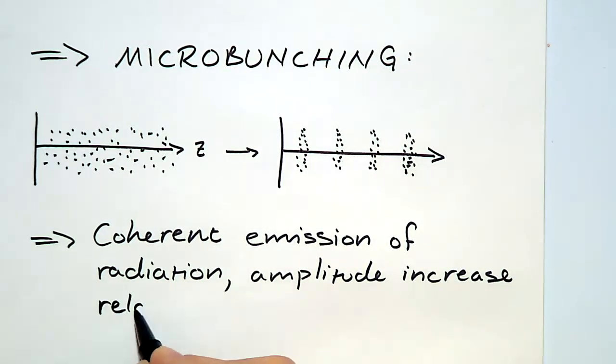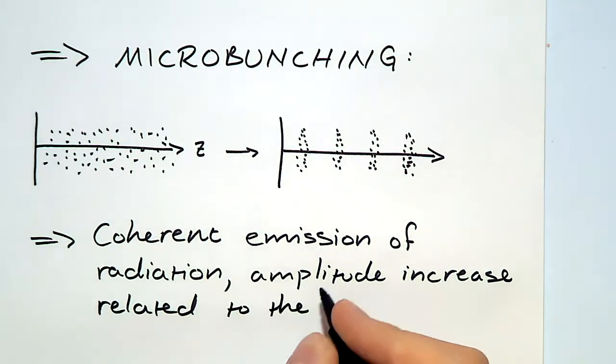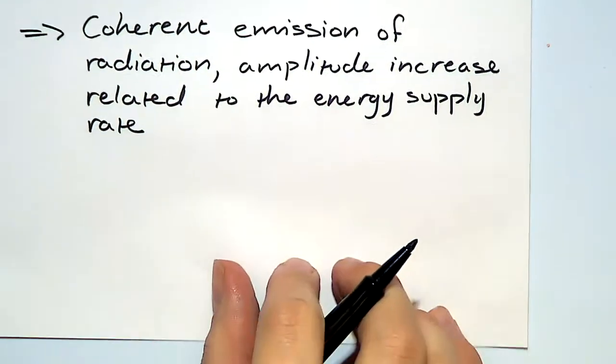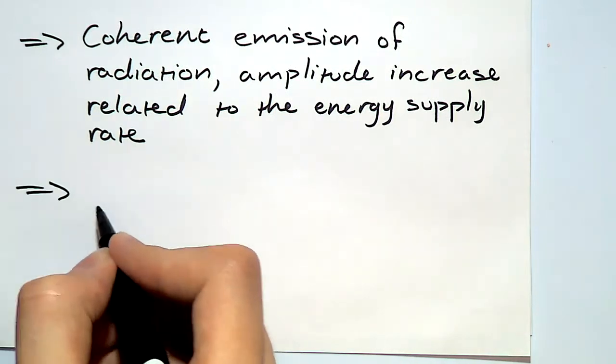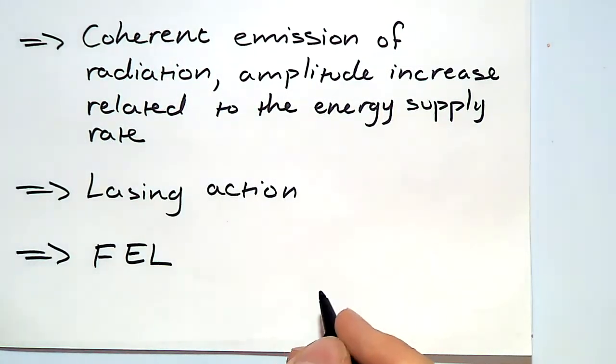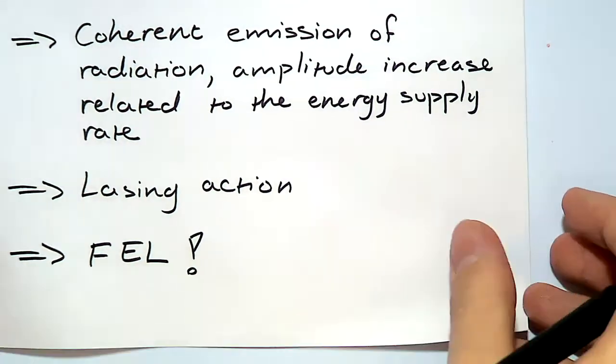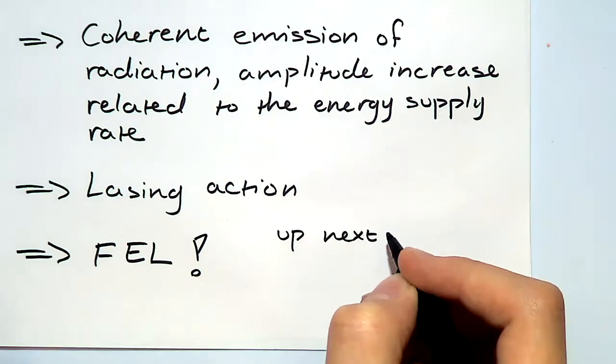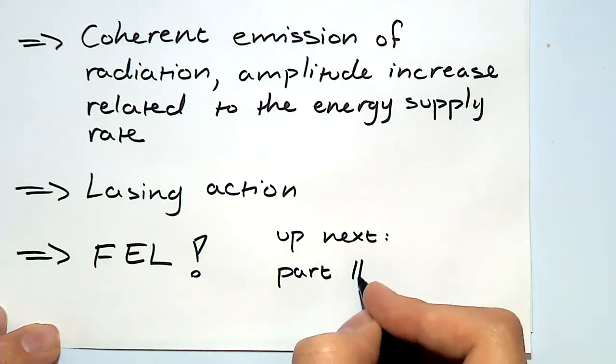So we now finally have the two key properties of the free electron laser. We get coherent emission of radiation with amplitude increase related to the energy supply rate. This is lasing action and we have ourselves a free electron laser, which concludes the first part of this video. Up next, applications.